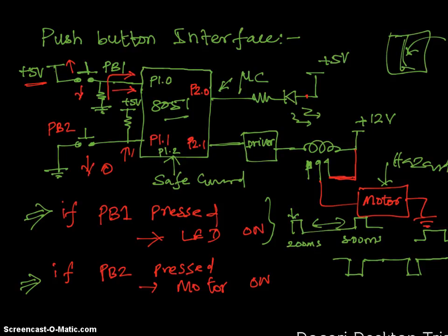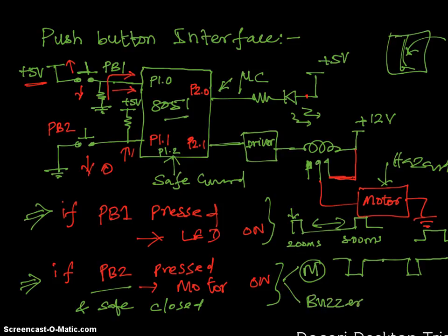Now, this concept, that means I am bringing a new concept. If push button two is pressed and the safeguard is closed, we can say the motor has to be running. Even we can add more sophisticated things like, if safeguard is not pressed and you are keep pressing the push button two, what we can do is, if push button two is pressed and safeguard is closed, motor on. Otherwise, even I can have a buzzer. That means if the push button two is pressed, whereas the safeguard is not closed, I can just give a buzzer warning. So these things, you can't do it manually. We need to have a controller.